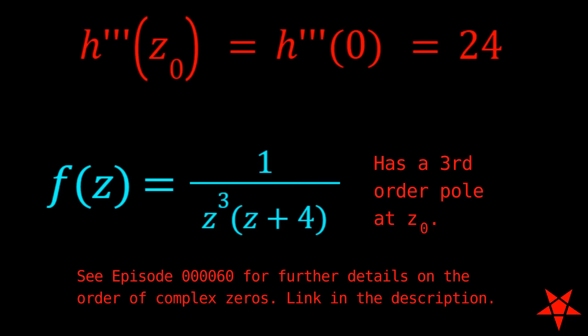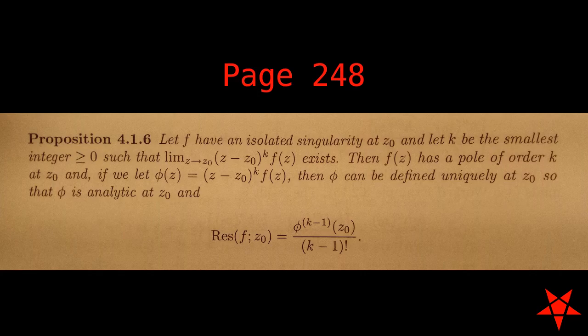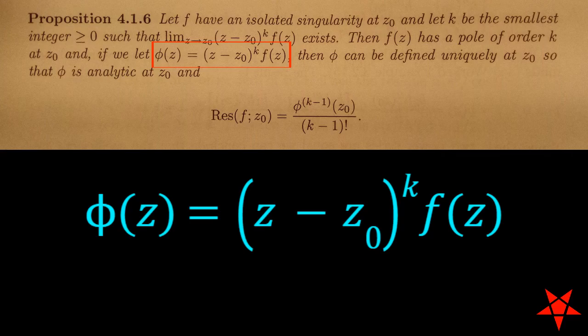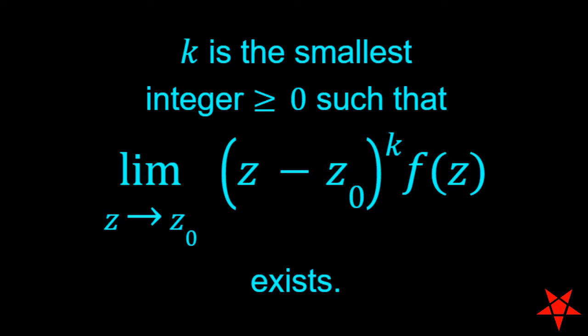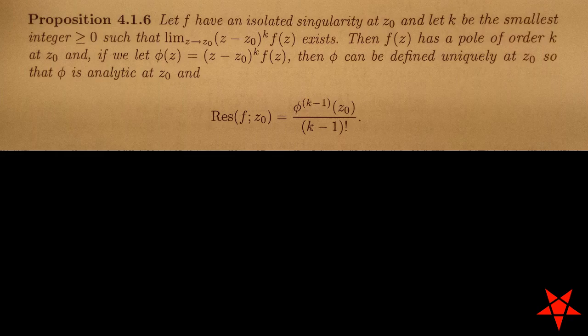Proposition 4.16 gives us an alternative to rigorously evaluating the denominator of f of z. If we let phi of z equal z minus z naught to the k times f of z, then k is the smallest non-zero integer such that the limit of z minus z naught to the k times f of z exists. In this case, the residue, according to Proposition 4.16, becomes the following expression, where k minus 1 is the order of the derivative of phi evaluated at z naught.